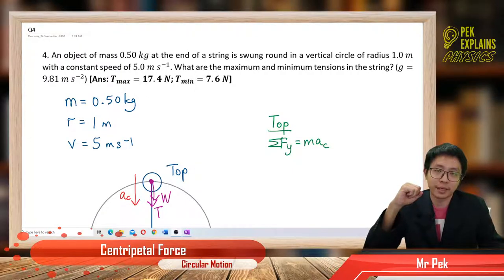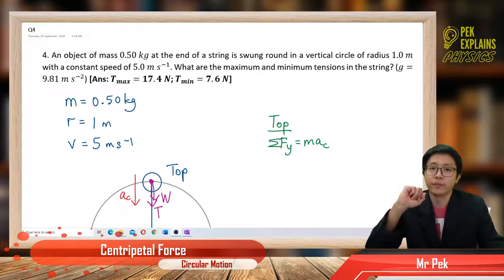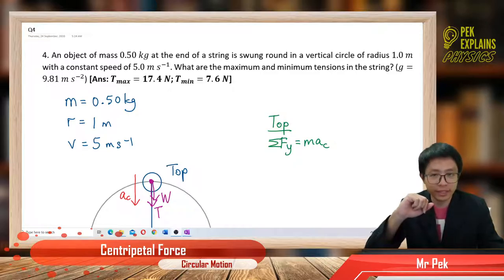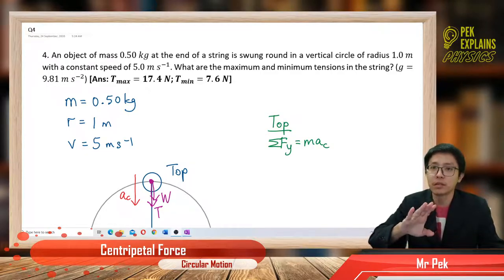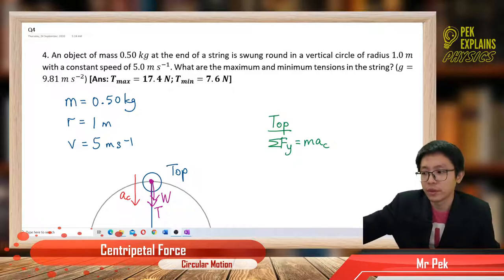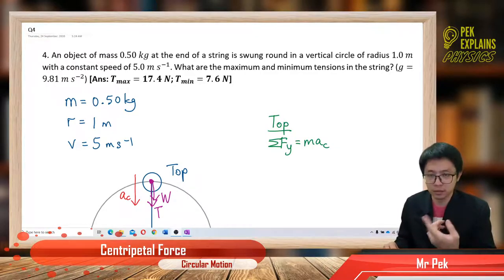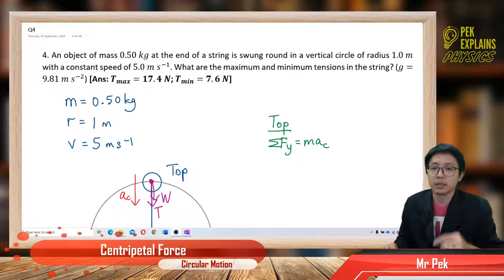Hi, welcome back. I'm Mr. Peck here to help you with Chapter 6, Circular Motion. Now this is question 4. This question 4 is the example for vertical circular motion. Now the circular motion has become vertical. Before that we have learned about circular motion in a horizontal plane and also we have learned about conical circular motion. Now it's the vertical circular motion.